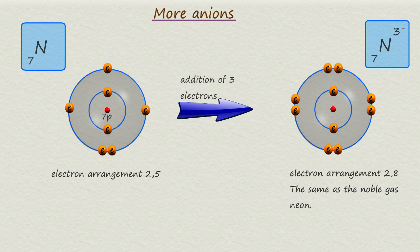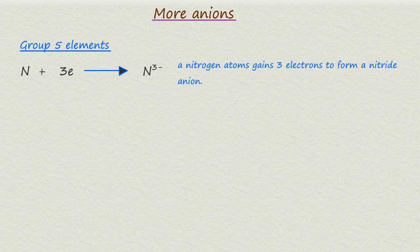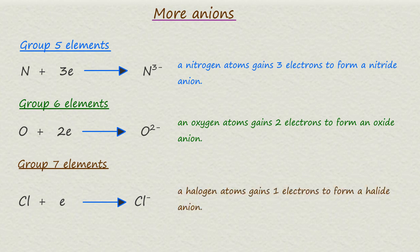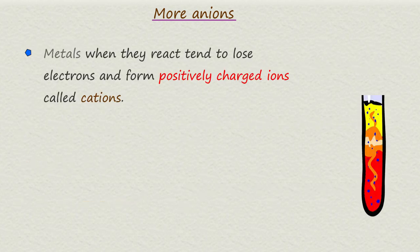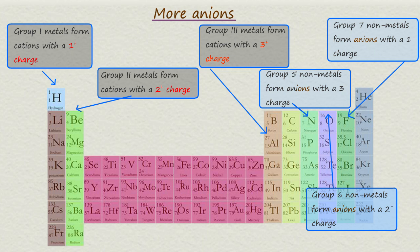To summarize using equations: a group five non-metal such as nitrogen gains three electrons to form a nitride anion with a three minus charge; a group six element such as oxygen gains two electrons to form an oxide ion with a two minus charge; and a group seven halogen such as chlorine gains one electron to form a halide ion with a minus one charge. In summary, metals lose electrons to form positively charged cations, while non-metals gain electrons to form negatively charged anions. The charges on these ions depend on the position of the element in the periodic table.